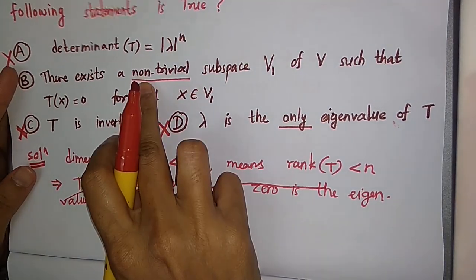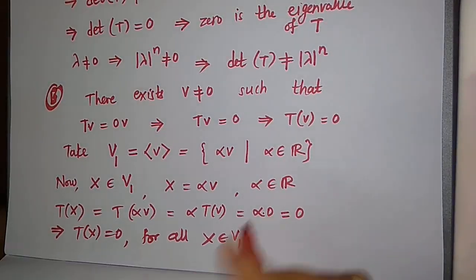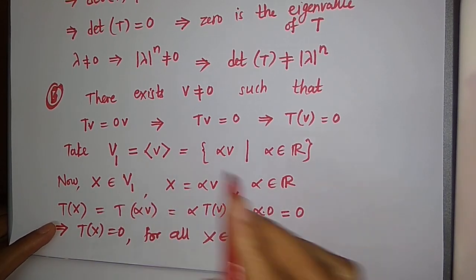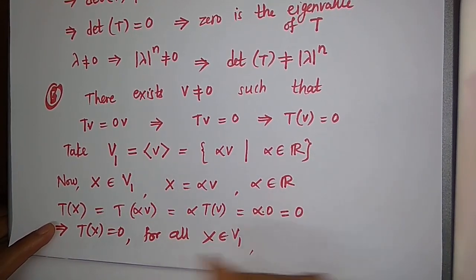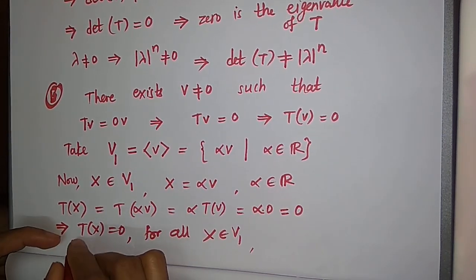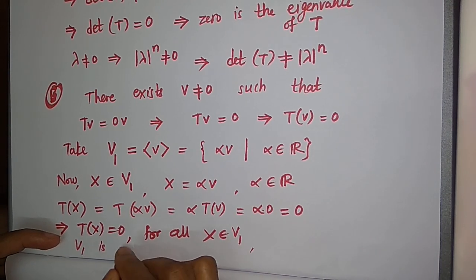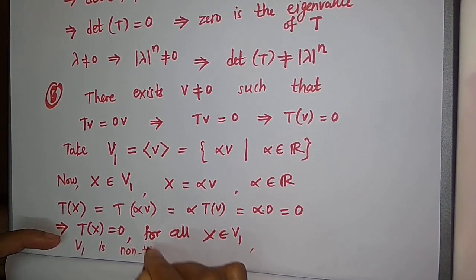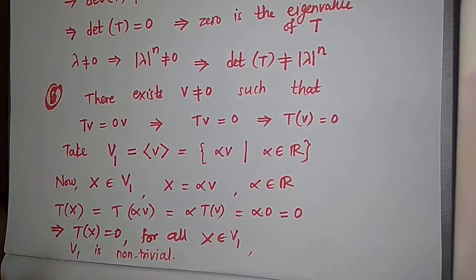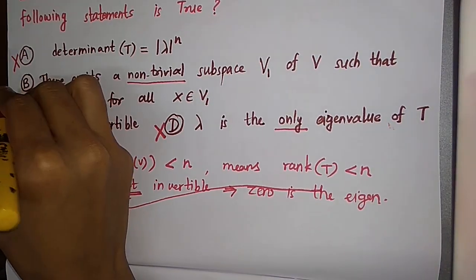Also note that V1 is a non-trivial subspace because v is non-zero, so the subspace V1 is non-trivial. Therefore option B is correct.